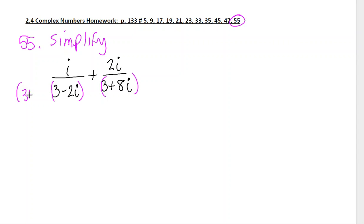We talked about the easiest thing to do is to multiply each of these fractions by the opposite denominator, which is still true. The opposite denominator is 3 minus 2i.